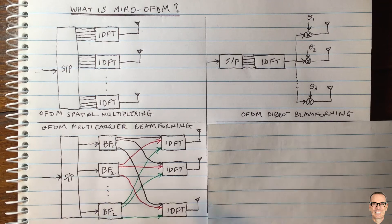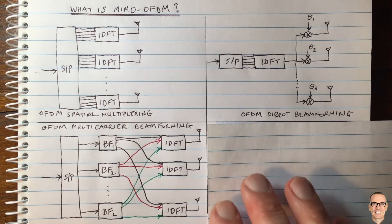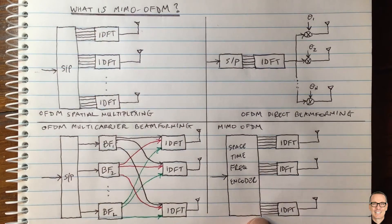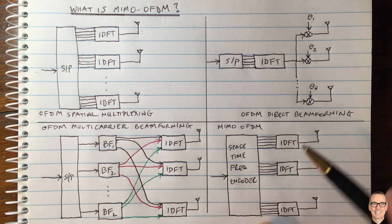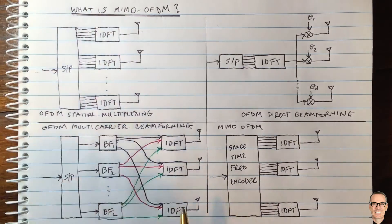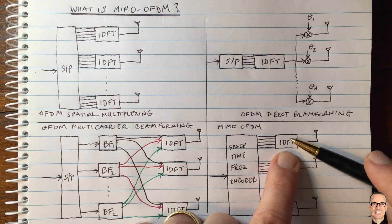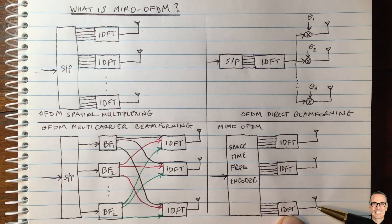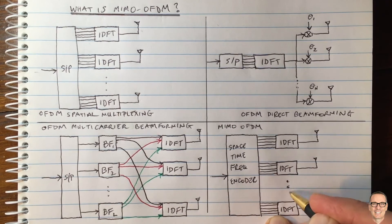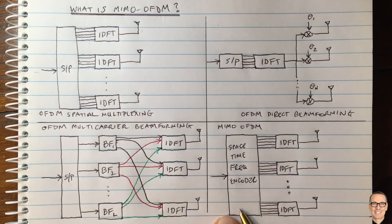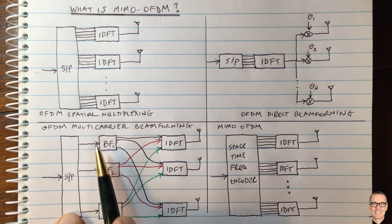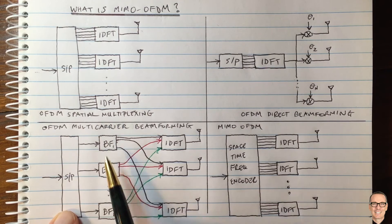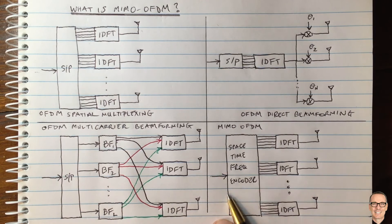The last and most general MIMO OFDM scenario uses what's called a space-time and frequency encoder. On the right-hand side it still has the same form — an OFDM modulator for each antenna — but now we allow ourselves to be even more general in what we do before going into those OFDM modulators, compared to just doing serial-to-parallel and then beamforming.